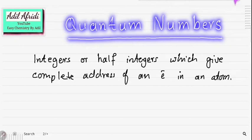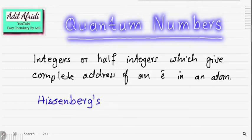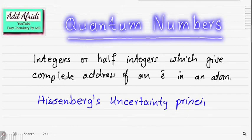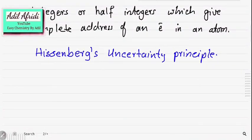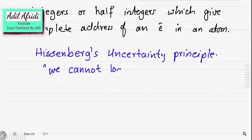Let's first look at the history of when quantum numbers became necessary. Heisenberg presented his Heisenberg's Uncertainty Principle, which in simple words states that we cannot locate an electron in an atom exactly.